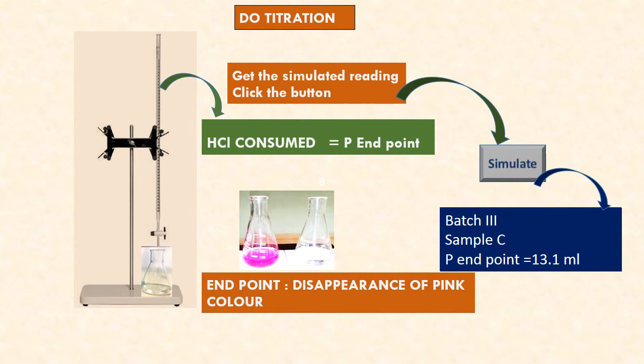Batch three students, please make a note. Batch four students, sample D phenolphthalein endpoint is 7.3 ml — please make a note. Simulating the last sample: batch five, sample E phenolphthalein endpoint is 12.9 ml — please make a note.